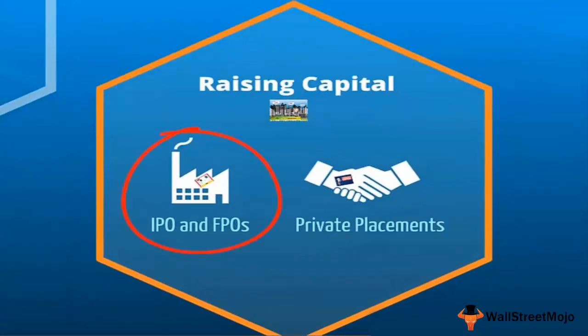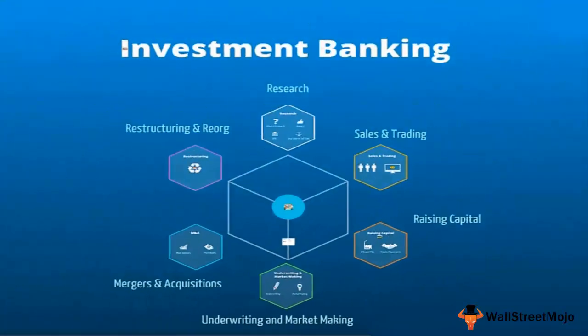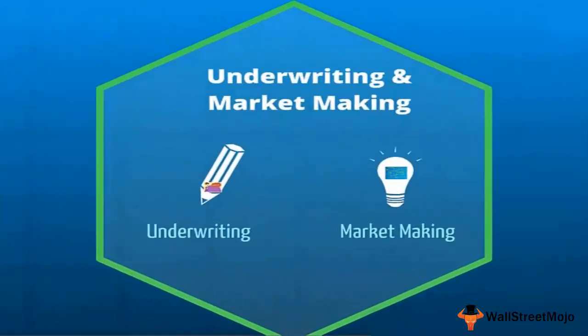Another important aspect of investment banking is helping companies raise capital. We saw that IPOs and FPOs are one way companies can raise capital through equity dilution to the public. There is also private placement, where companies dilute their stake to only a limited number of strategic investors — a very important activity within the investment bank.